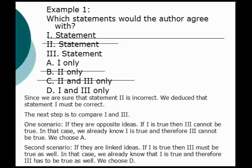Going back to example one, our starting point was being confident that statement two is incorrect. Following the steps, we crossed out answer choices B and C, and through deduction we know statement one must be correct. The next step is to compare statements one and three. One scenario is that statements one and three are opposite ideas — if one is true, then three cannot be true. Since we know statement one is true, statement three cannot be true, so we choose A. Another scenario is that statements one and three are linked ideas — if one is true, then three must also be true. In that case, we choose answer choice D.